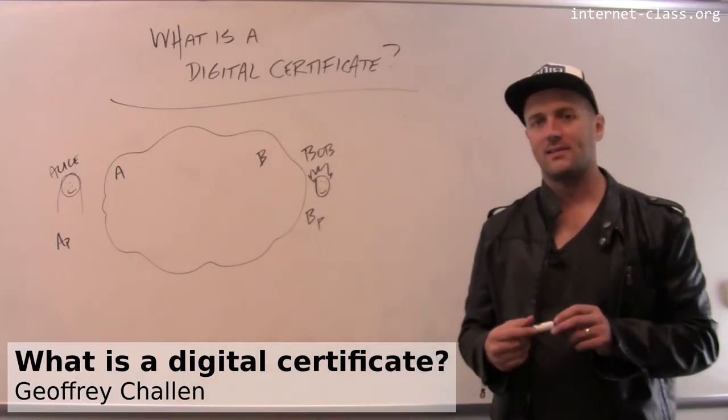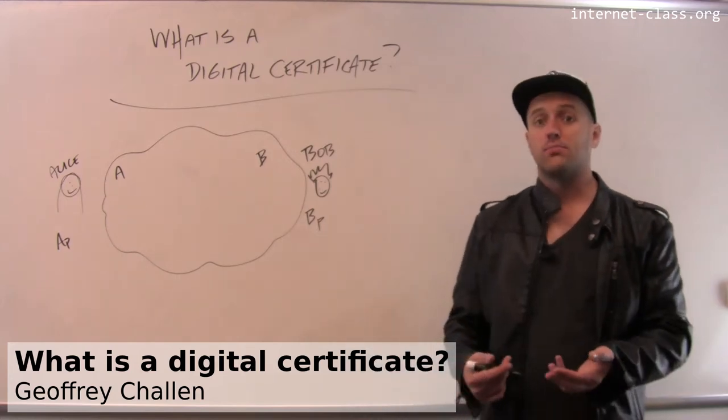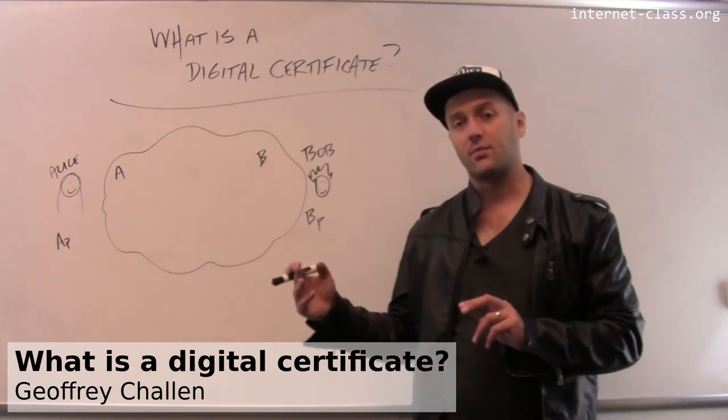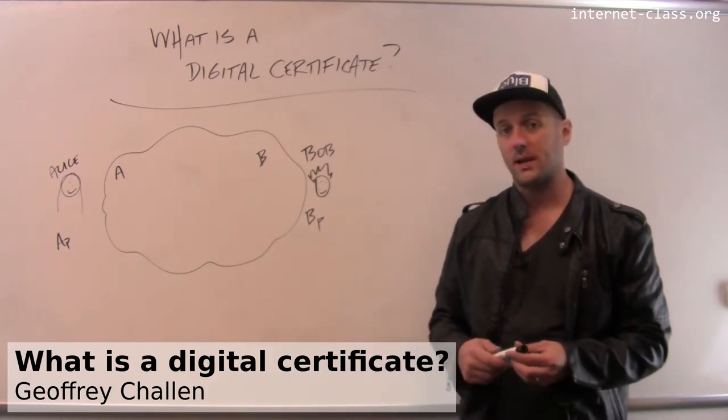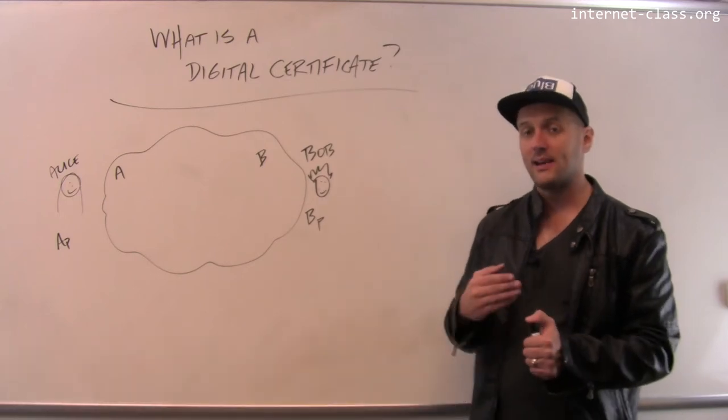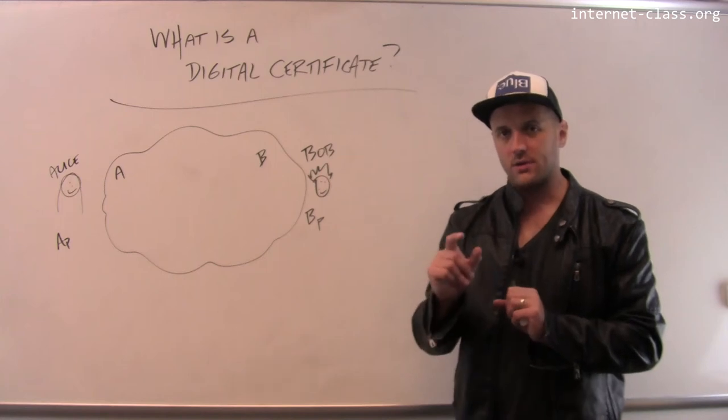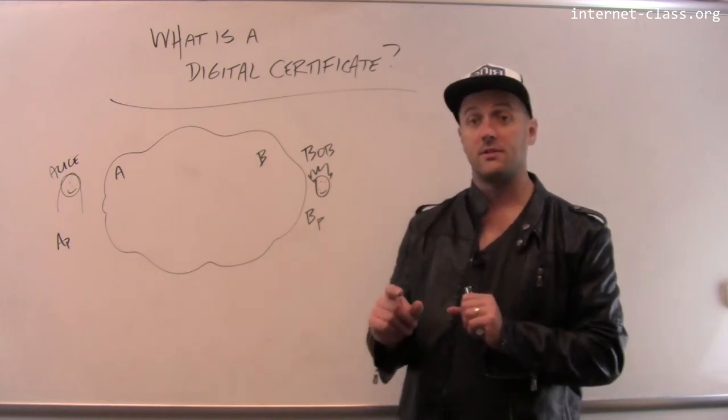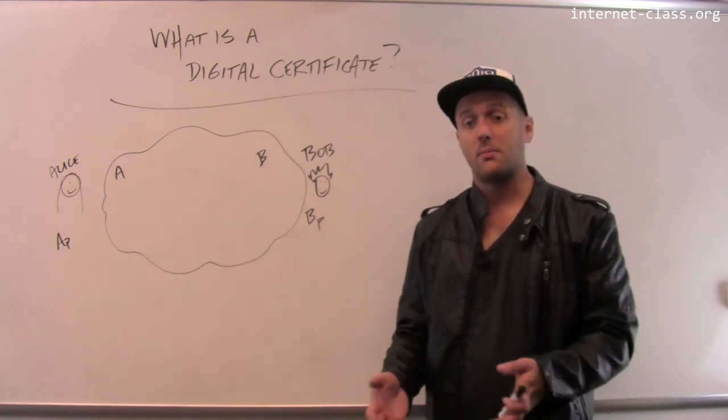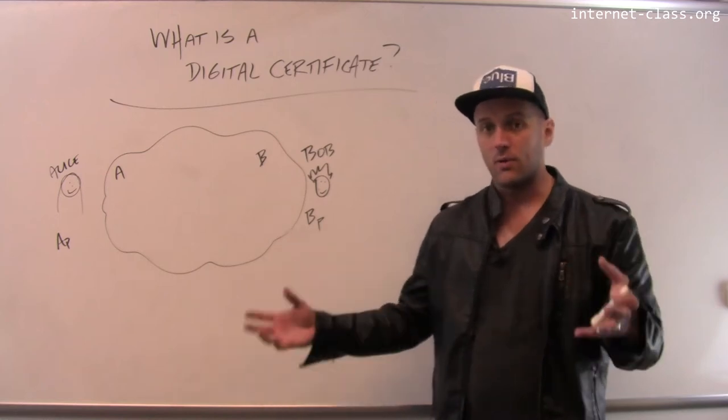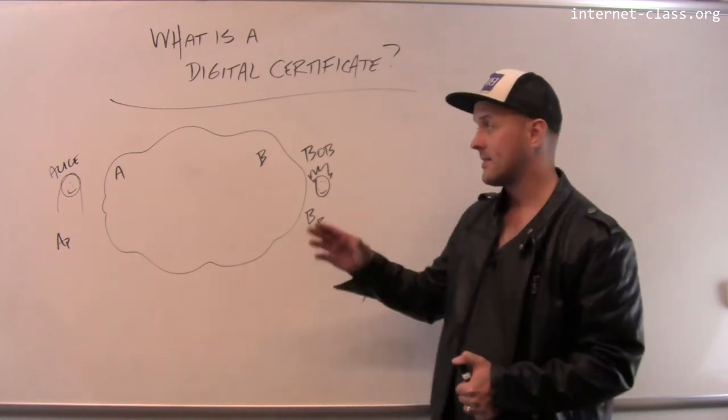Public key cryptography has allowed us to solve one problem that Alice and Bob might face when they're trying to exchange information securely online. That's this idea that I don't want my messages to be altered, I don't want my messages to be decrypted. So I don't want my private information to be read on the way from Alice to Bob.